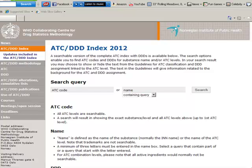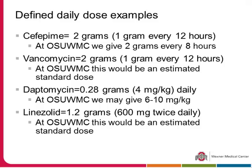For example, cefepime — a fourth-generation cephalosporin — has a defined daily dose of two grams, equivalent to one gram every 12 hours. But in reality we give two grams every eight hours by extended infusion, so the DDD significantly underestimates actual use. Vancomycin's DDD is two grams (one gram every 12 hours), a reasonable standard estimate. Daptomycin, an anti-MRSA drug, is calculated at four milligrams per kilogram for a 70-kilogram patient, but we typically give six to ten milligrams per kilogram. Linezolid, another MRSA drug, actually aligns with standard dosing.